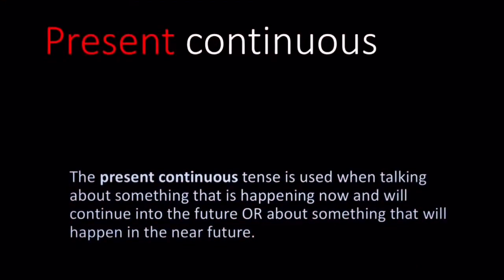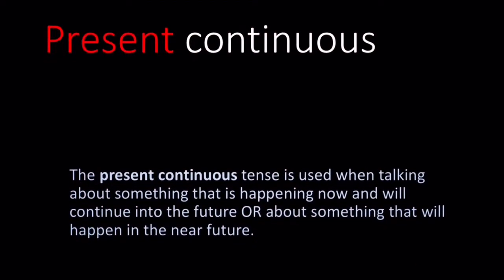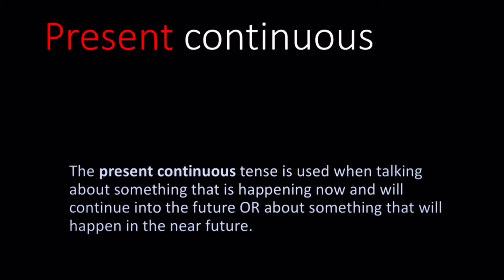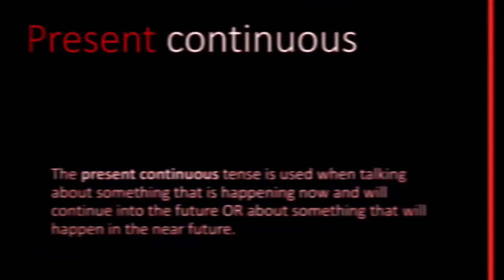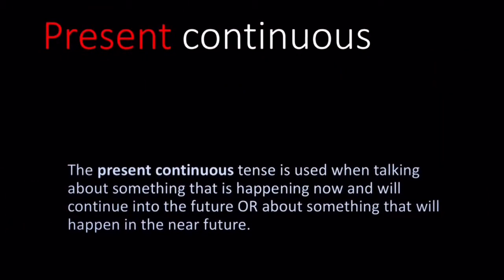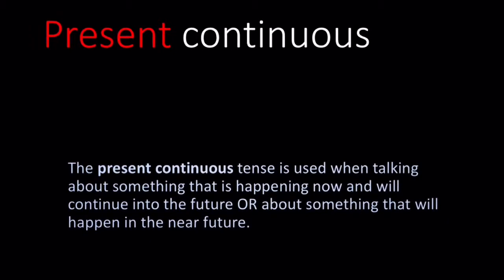The present continuous tense is used when we're talking about something that's happening right now and something that will continue to happen into the future. Or we can even talk about the near future.